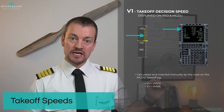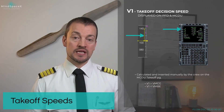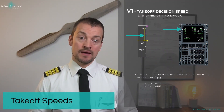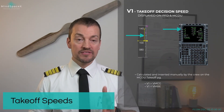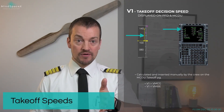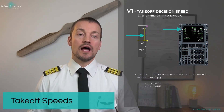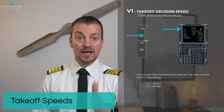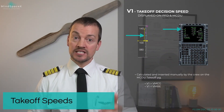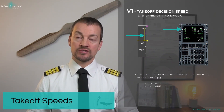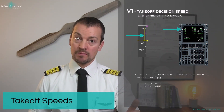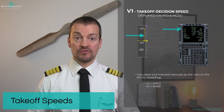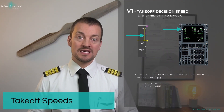An important point, not always highlighted in the operational manual, is that V1 must always be higher than VMCG. This ensures that if the pilots continue a takeoff above V1 — the decision speed — they have enough rudder effectiveness to lose an engine, maintain directional control, and safely get airborne. If you were to make a decision at V1 before reaching VMCG, you would apply maximum power above V1 and not be able to maintain directional control, which is a recipe for disaster.